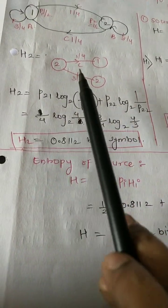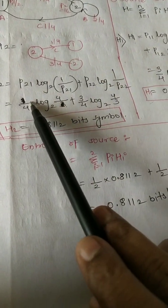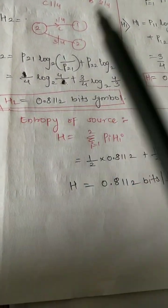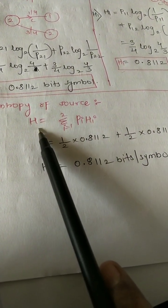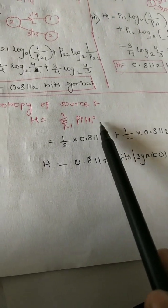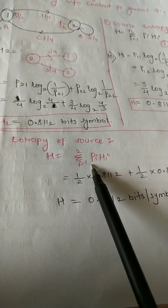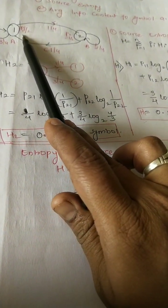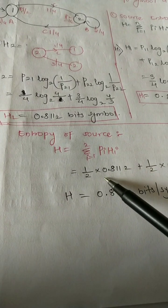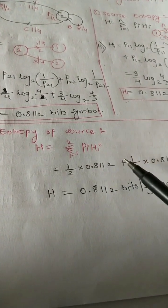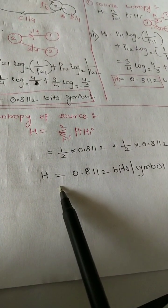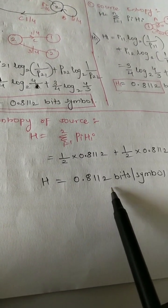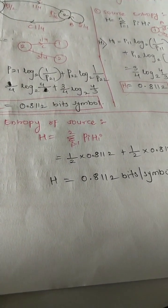Similarly, H2 is calculated by drawing the corresponding tree and inserting values into the formula. Now to find the entropy of the source, the formula is H equals summation i to two of p_i times H_i. The probability p1 is one by two and p2 is also one by two. Putting in the probabilities: one by two times H1 plus one by two times H2, the total source entropy H equals 0.812 bits per symbol.